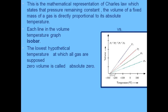Each line in the volume-temperature graph is called an isobar. 'Iso' means same and 'bar' means pressure, so an isobar represents a process at constant pressure. The lowest hypothetical temperature at which all gases are supposed to have zero volume is known as absolute zero — the temperature at which gases can be most easily liquefied — which corresponds to minus 273.15 degrees Celsius or 0 Kelvin.